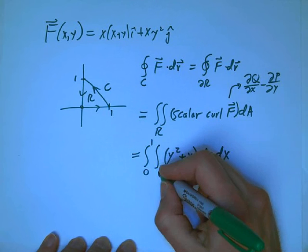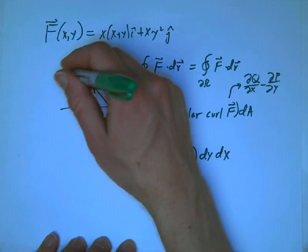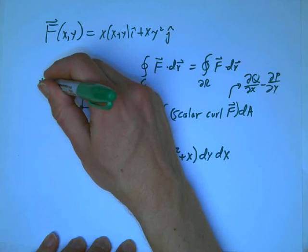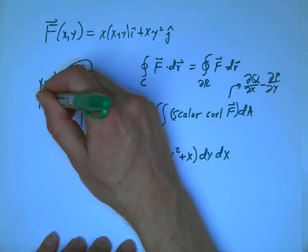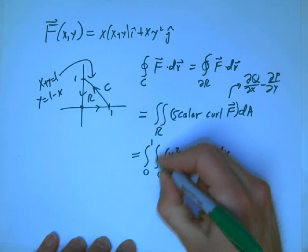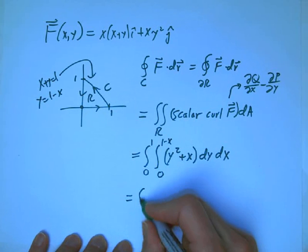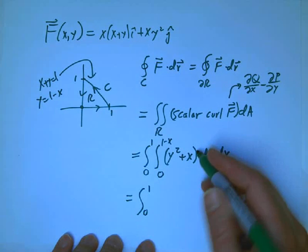x is going from 0 to 1. And y is going from, let's see, what is this curve? It's where x plus y equals 1, or y is 1 minus x. So 0 to 1 minus x. Not too hard.